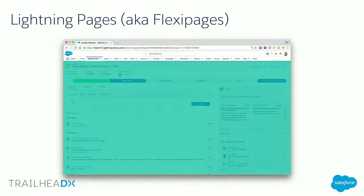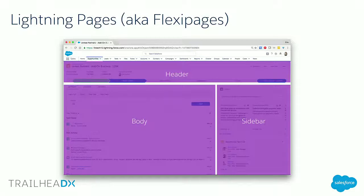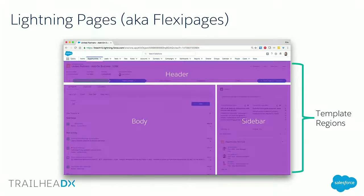A little bit of background — starting with Lightning pages. If you're a developer who's touched this code before, you might have also seen the term FlexiPage. The page itself is the area below the navigation. Within each one of these pages is a template, and the template defines the core UX flow and layout. Templates come in one, two, or three column variations. Think about it: you have header, body, sidebar — these are the areas where admins drag and drop components and where end users interact with them.